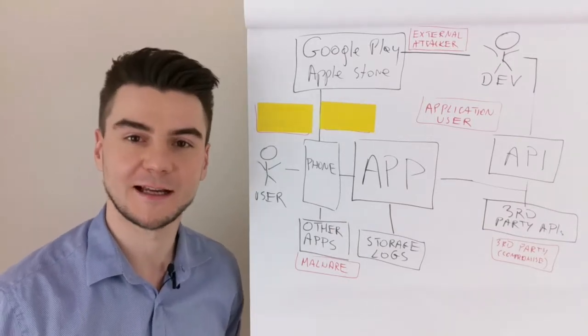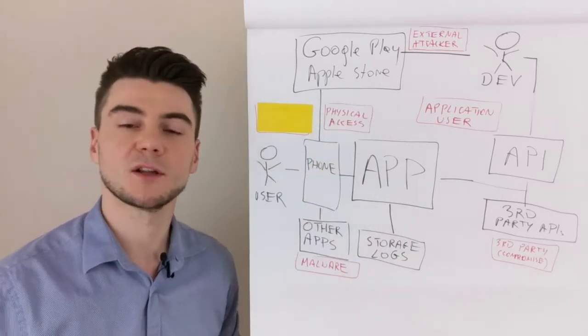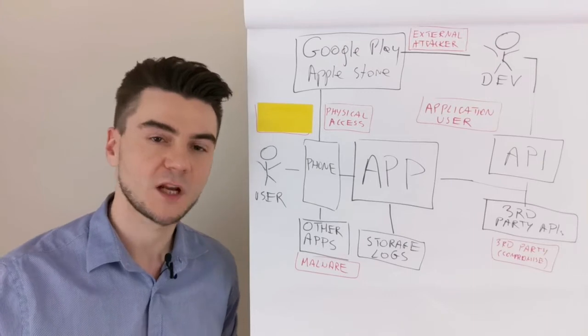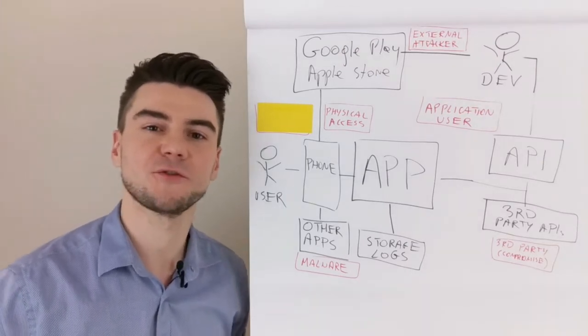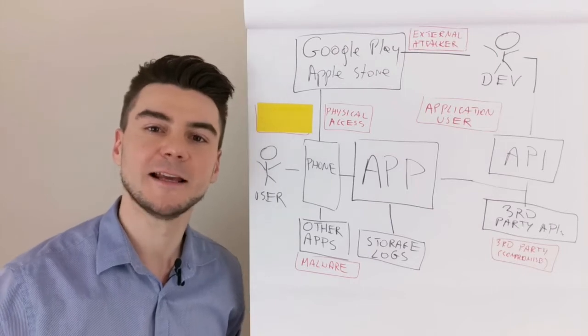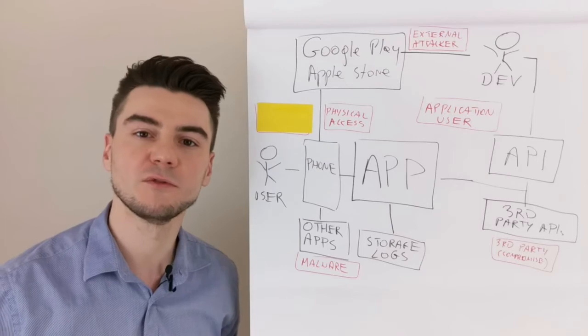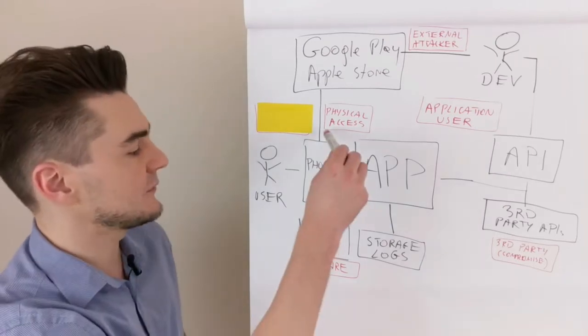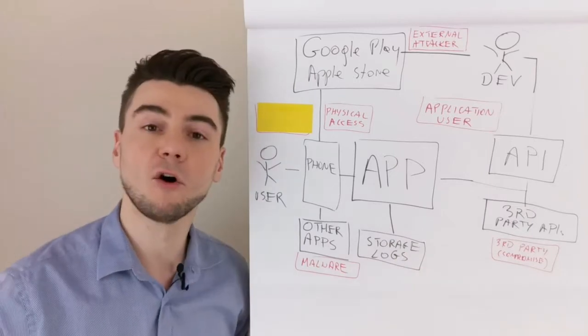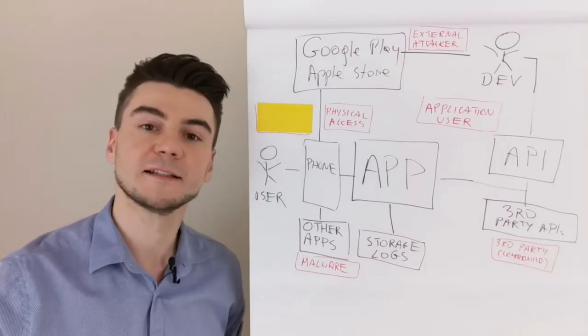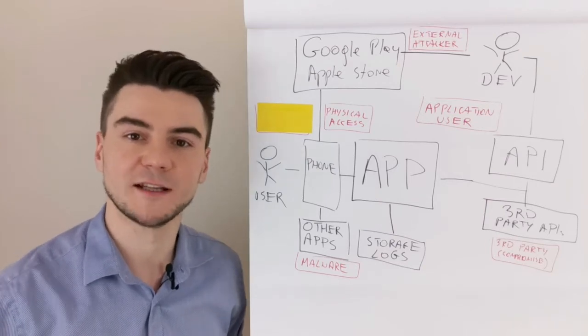Then we have physical attacks. Physical access can be either permanent, think stolen phone, or temporary, compromised in a bar. OWASP Mobile Application Security Verification Standard and ASVS mentions a lot of attacks with physical access to the phone, including access to the sensitive information stored in the shared memory, in storage, in logs, and also compromising the phone via zero-day exploits to jailbreak it or to root it.